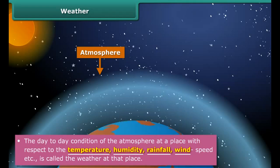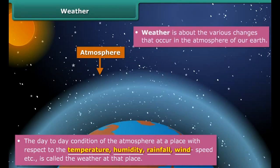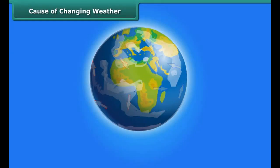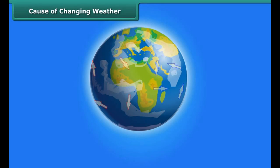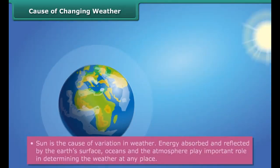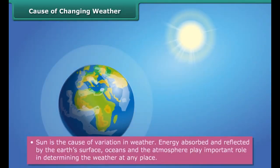Weather is about the various changes that occur in the atmosphere of our Earth. Weather is such a complex phenomenon that it can vary over very short periods of time. The Sun causes all changes in the weather — energy absorbed and reflected by the Earth's surface, oceans, and the atmosphere play important roles in determining the weather.